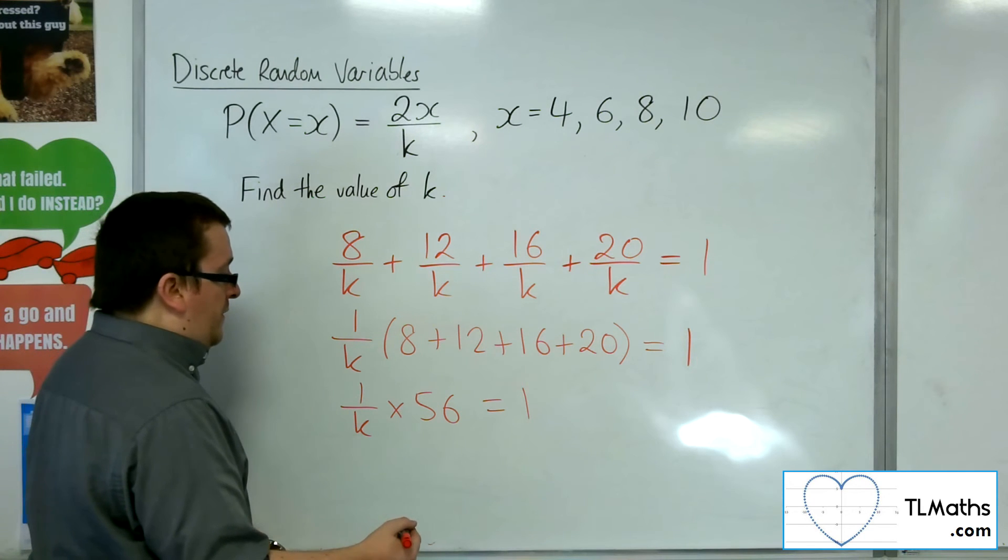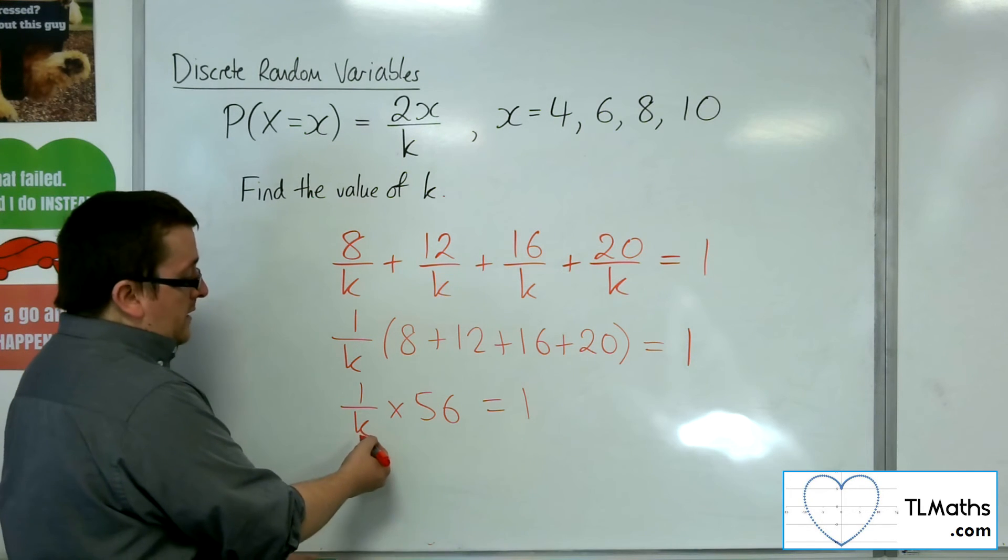So, if I divide both sides by 56, or I can see that k's got to be 56.